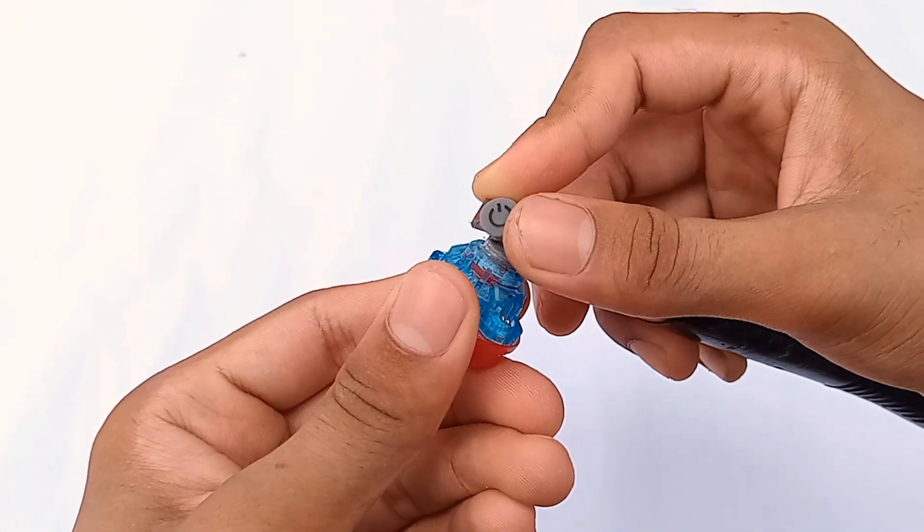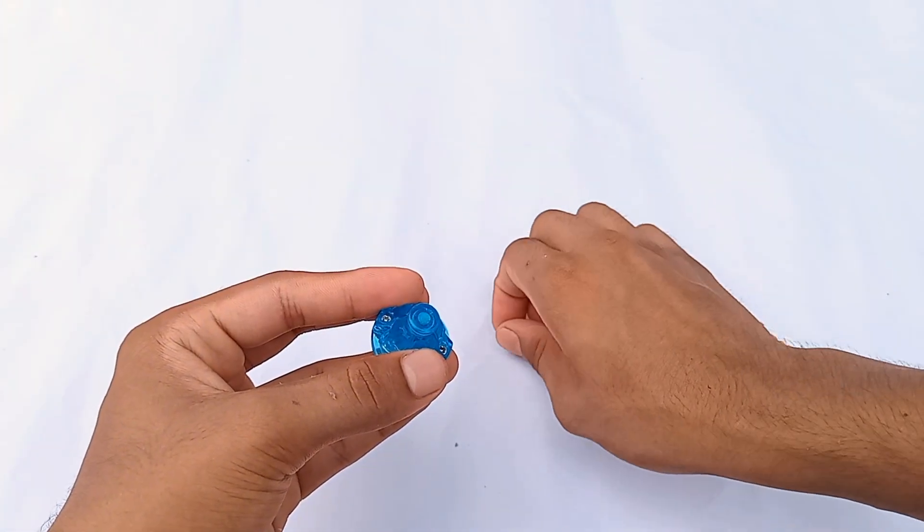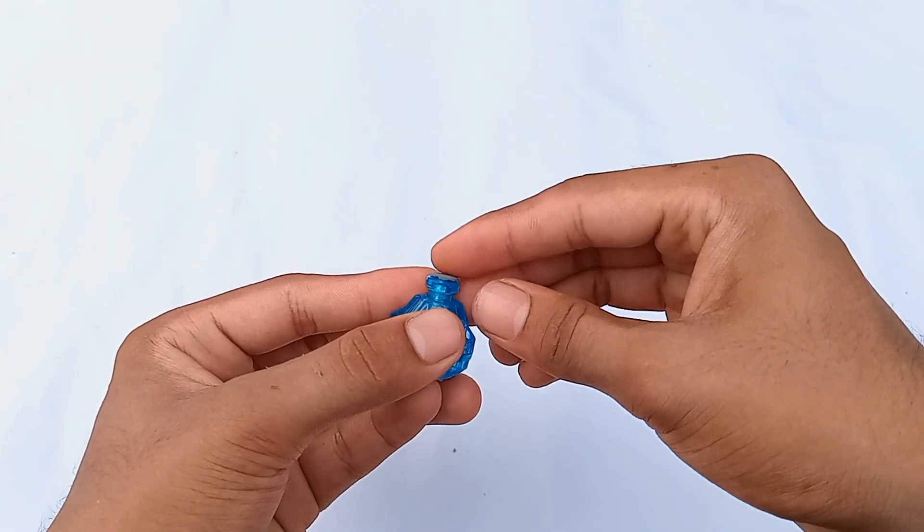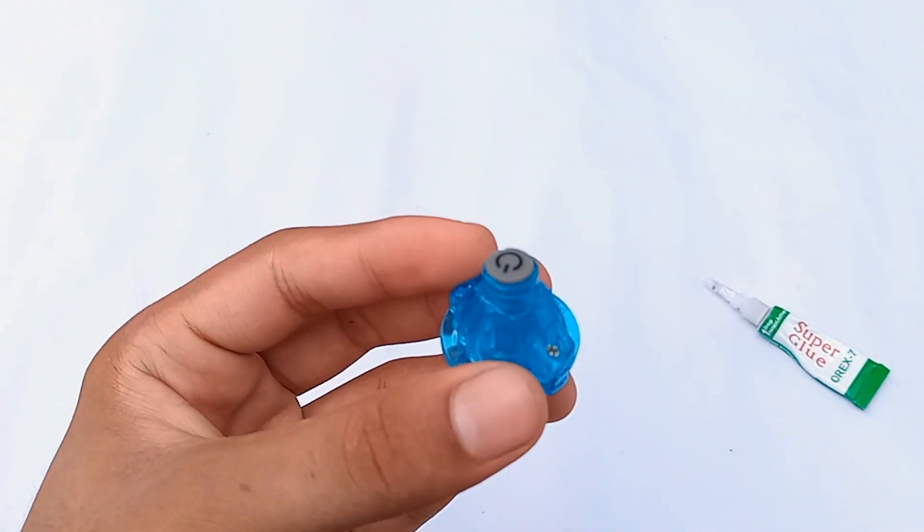Attach the rubber switch properly to the tip of the Volcanic driver with glue. Synon recommends using super glue first, and then if possible, try using hot glue for better adhesion.